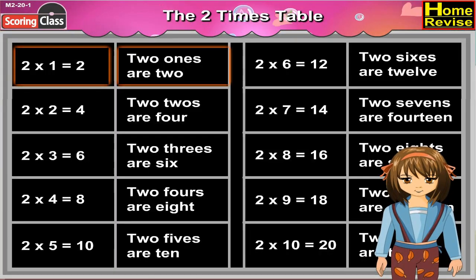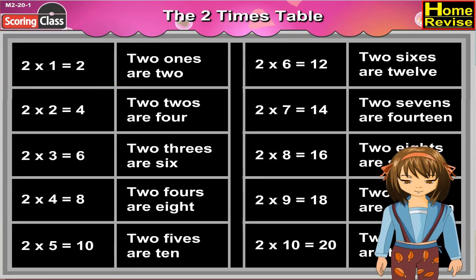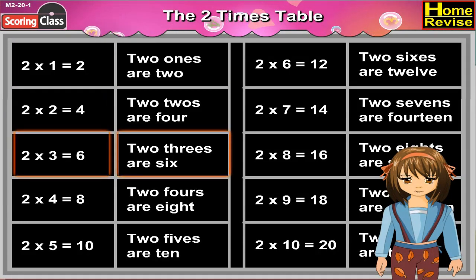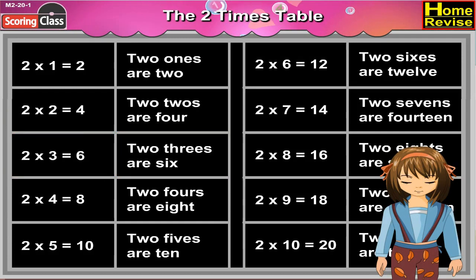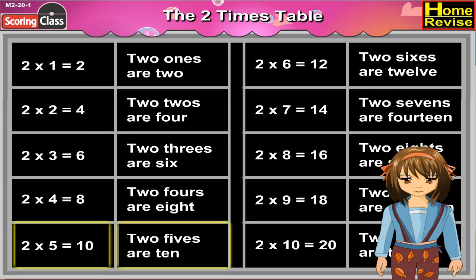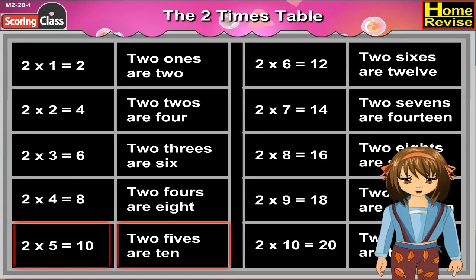2 ones are 2, 2 twos are 4, 2 threes are 6, 2 fours are 8, 2 fives are 10.